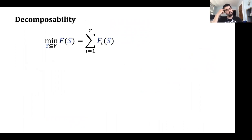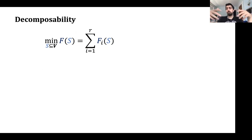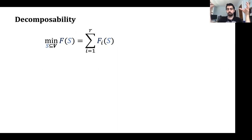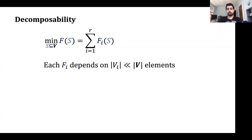Decomposability means F can be written as a sum of simpler functions — still submodular, but considerably simpler. The simplest way to say a function is simple is that it only depends on a few elements. Each F_i only depends on a small subset V_i of the ground set V. Looking at the applications, this is not a very strict assumption — most problems in practice are decomposable. It's a natural property.